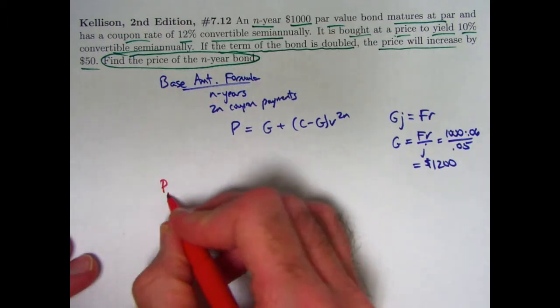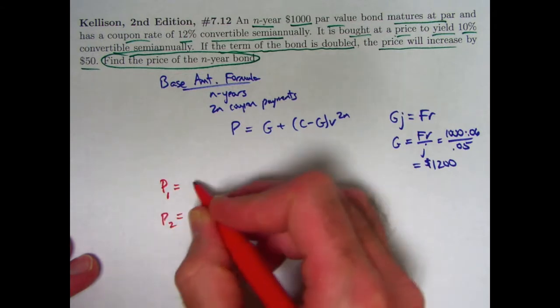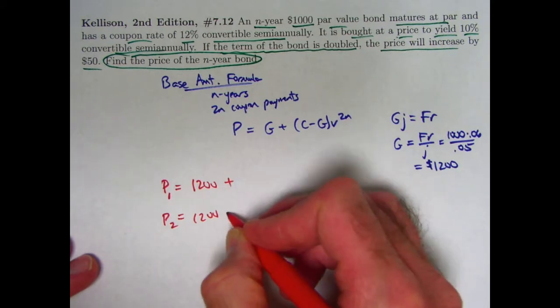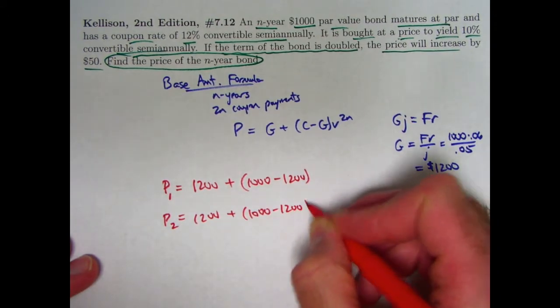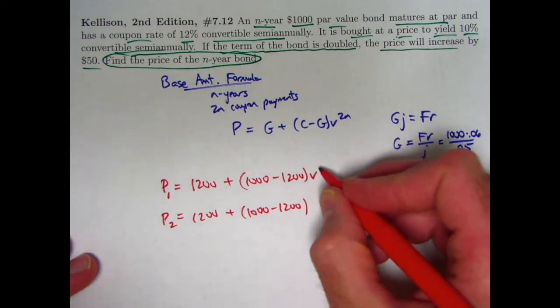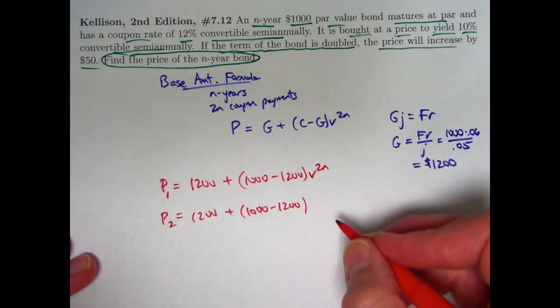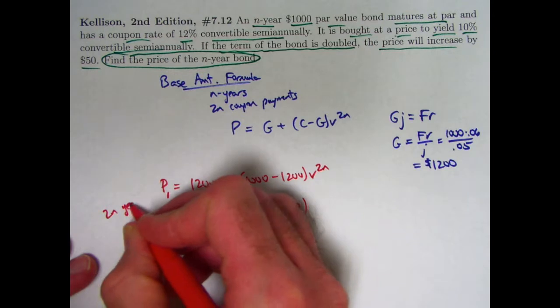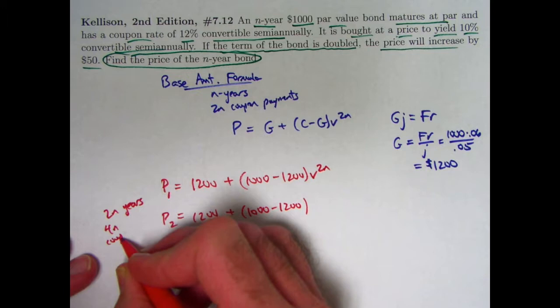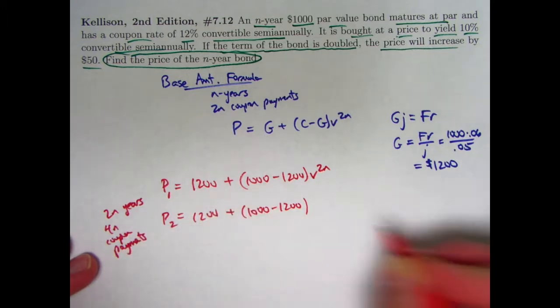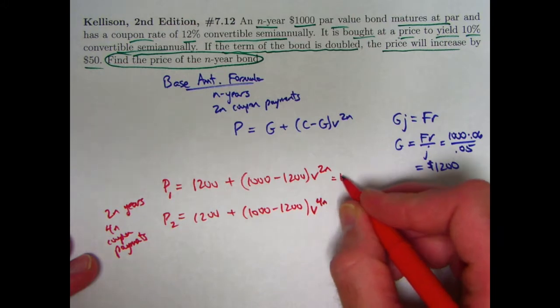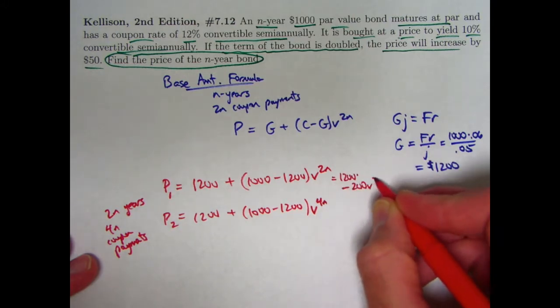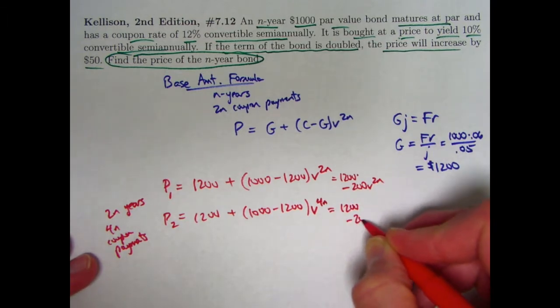Let's plug in what we know for these two bonds. We've got the first bond, P1. Both bonds, P1 and P2, have a base amount of 1,200. C in both cases is 1,000. The difference is with the first bond, the original bond, we have n years, so 2n periods, and we have a v to the 2n here. With the second bond, we have 2n years, we are doubling the term, and 4n coupon payments. So I'd have a v to the 4n right here. Let's simplify this a tiny bit. This would be 1,200 minus 200 v to the 2n. This would be 1,200 minus 200 v to the 4n.